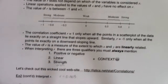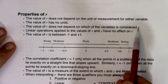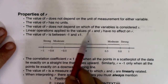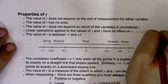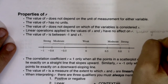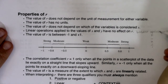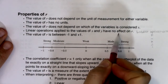The third property: the value of R does not depend on which variable is considered x. The fourth property: linear operations applied to the values of x and y have no effect on R. When we talk about linear operations in math, we have four of them: addition, subtraction, multiplication, and division. Something like square rooting or squaring is not considered linear. But these four operations are linear and have no effect on R.